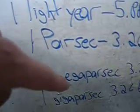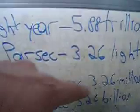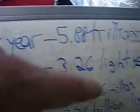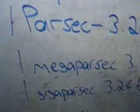Then you go down to one megaparsec. It's been a while since I looked it up, but it's 3.26 million light years. So essentially what you're taking is one parsec — 3.26 light years — times one million, and you get one million parsecs. That makes sense.